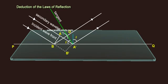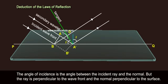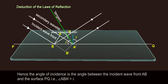Deduction of the Laws of Reflection. The angle of incidence is the angle between the incident ray and the normal. But the ray is perpendicular to the wave front and the normal perpendicular to the surface. Hence, the angle of incidence is the angle between the incident wave front AB and the surface PQ, that is angle ABA' equals to I.